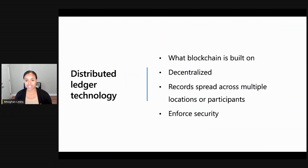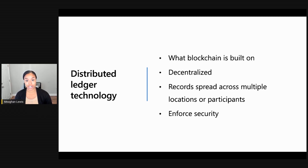A blockchain is different from a traditional database because all the data is not stored in one central location. Instead, a record of the ledger is stored amongst participants and they can verify all of the data that is being added. You can think about it as a database but without any single administrator — instead, everyone has some admin privileges. Having multiple copies of the database among participants and decentralized authority describes the concept of distributed ledger technology, which blockchain is built on.